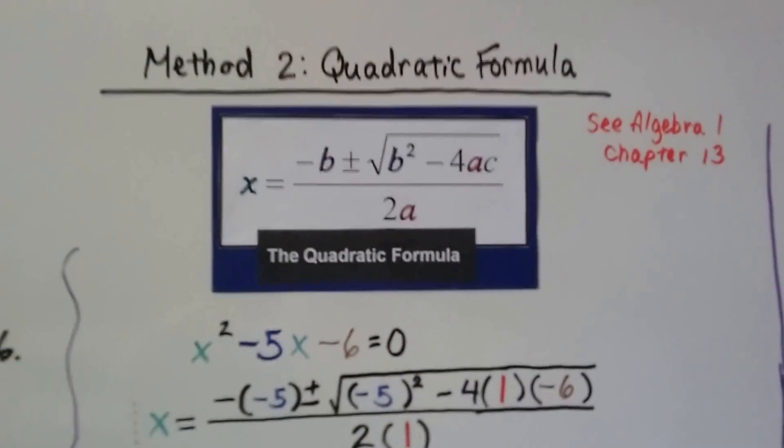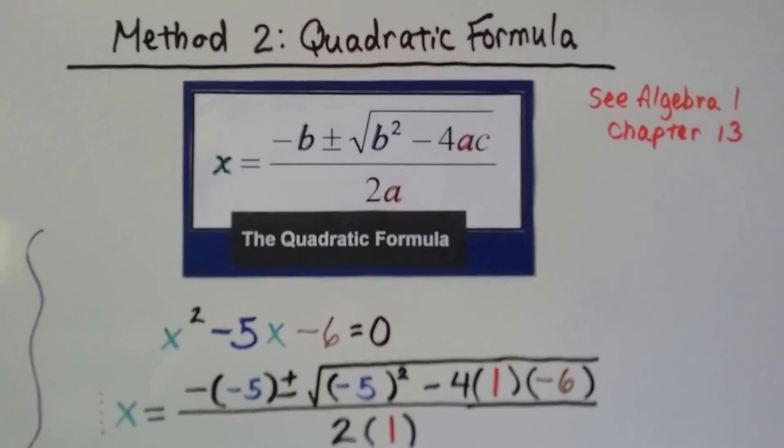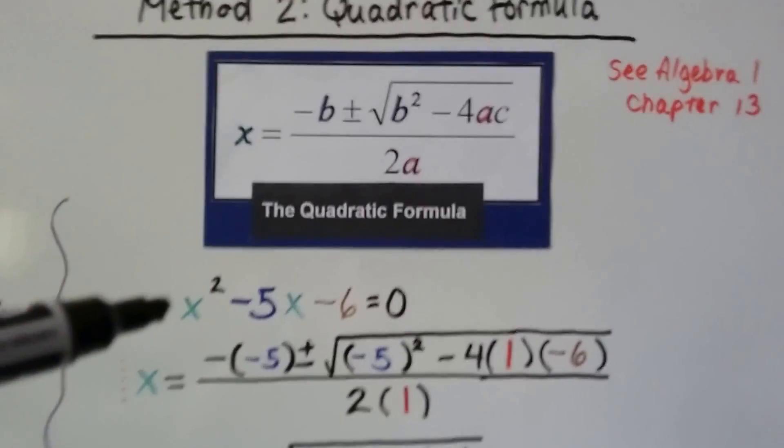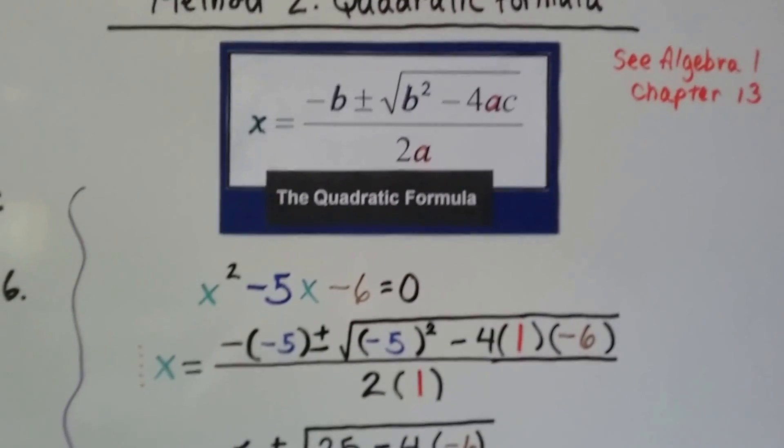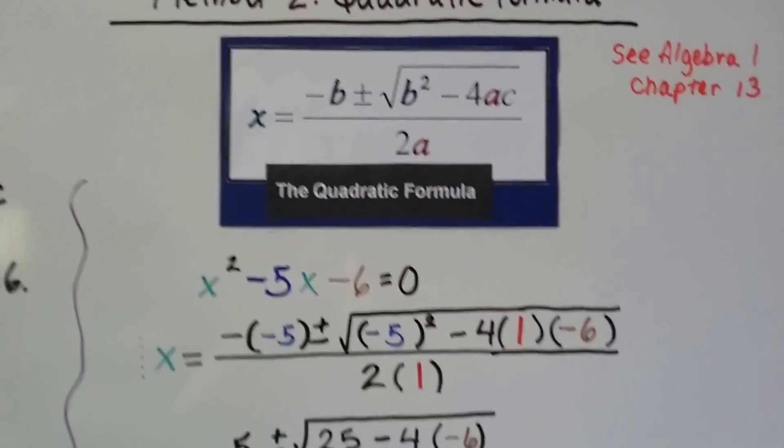Method 2 would be the quadratic formula, which is also in Chapter 13 if you need a review on that. So this was our equation, x² - 5x - 6 = 0.